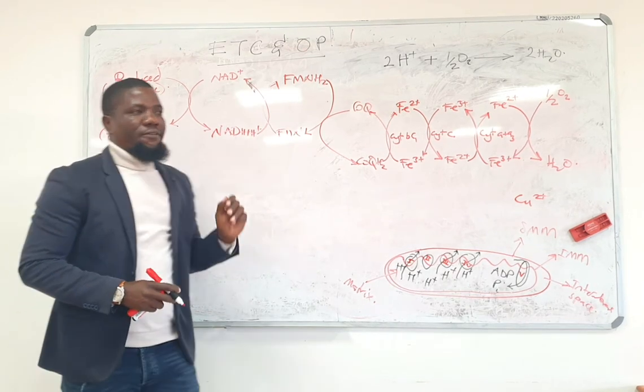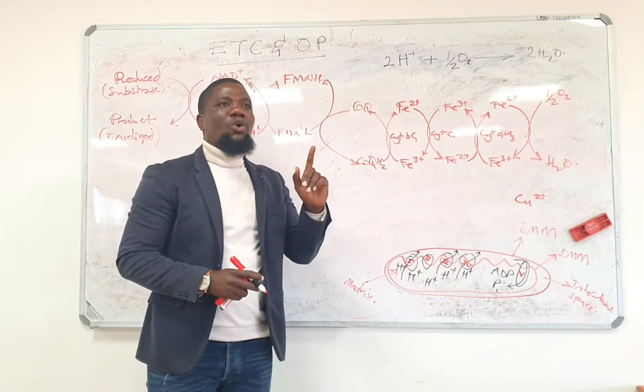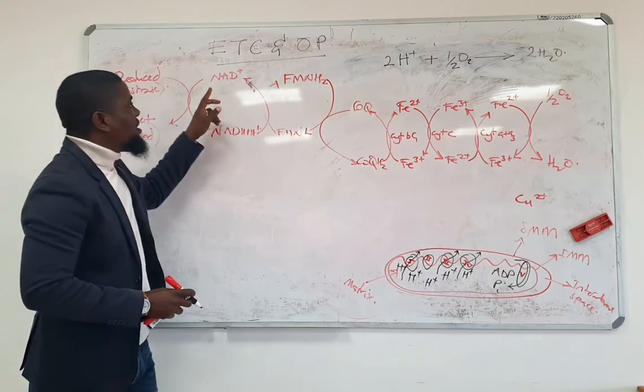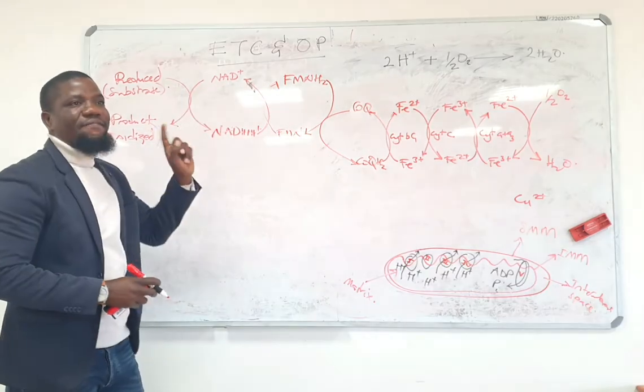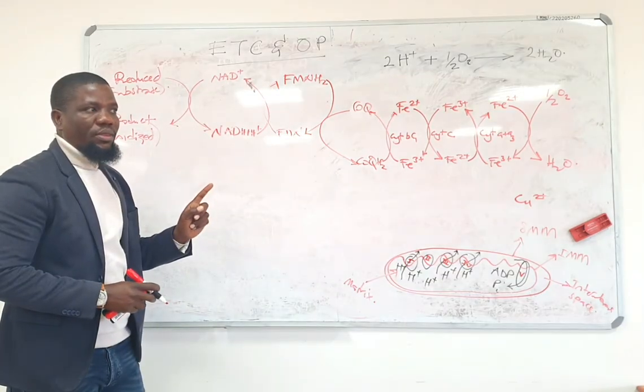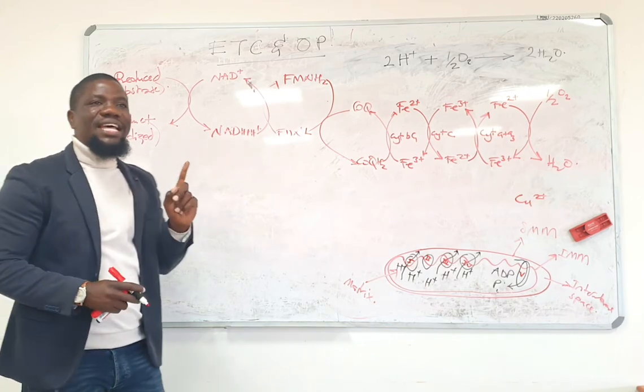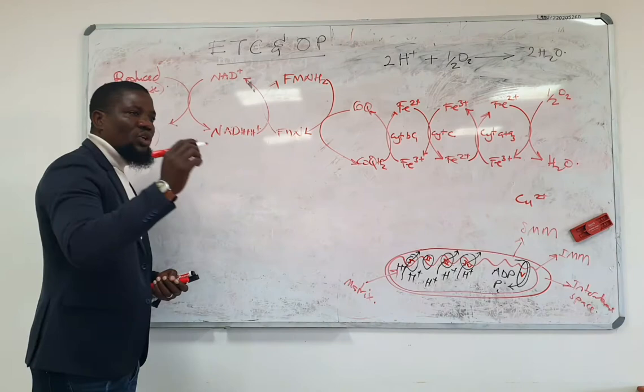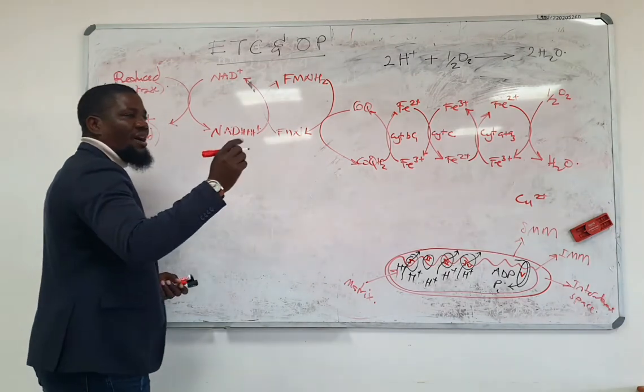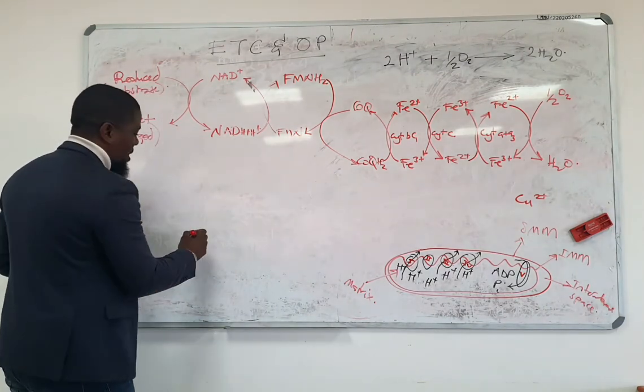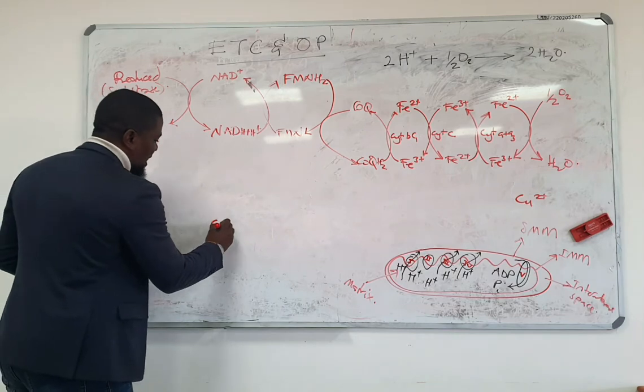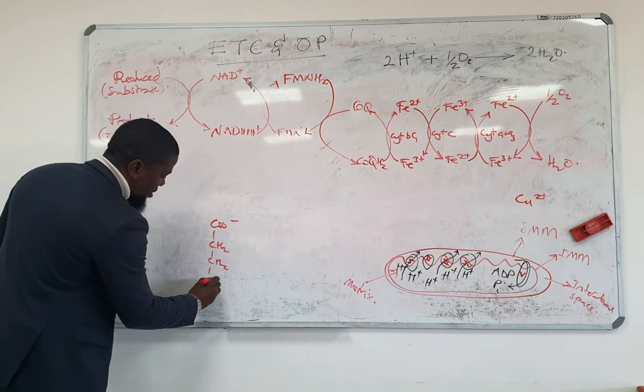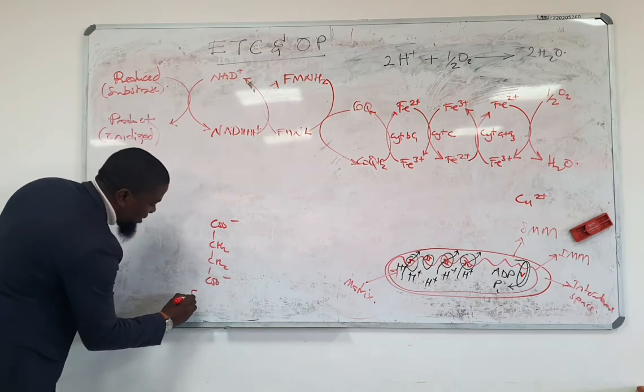What if the coenzyme of this particular enzyme is not NAD but it's FAD? If the coenzyme is FAD, you will discover that this reaction will proceed in this way. So you have a reduced substrate again and this reduced substrate is actually going to be